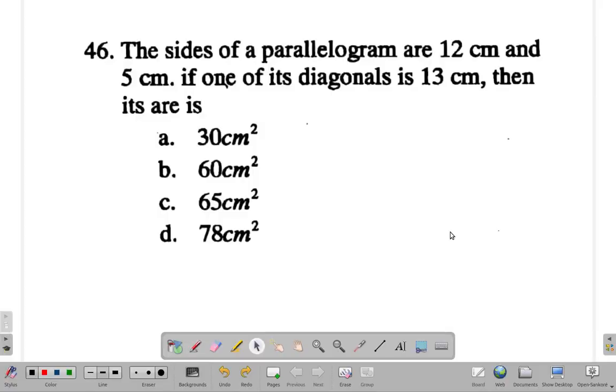Question 46 says take a minute and a half to do this and come back. All right, what did we get for it? Let's see, the sides of our parallelogram are 12 cm and 5 cm. One of its diagonals is 13, then its area is. Let's see, let me form my parallelogram.